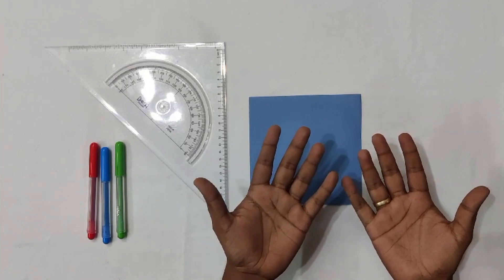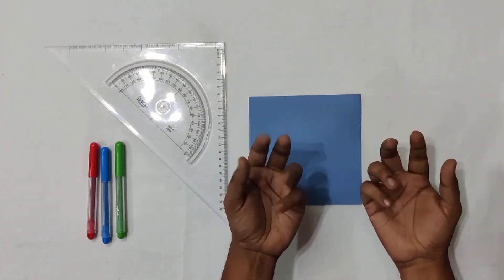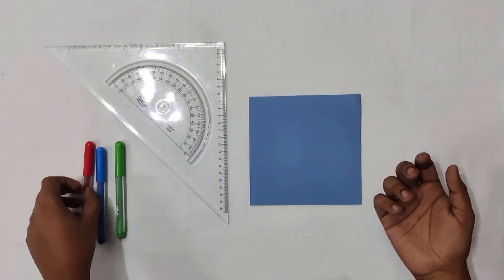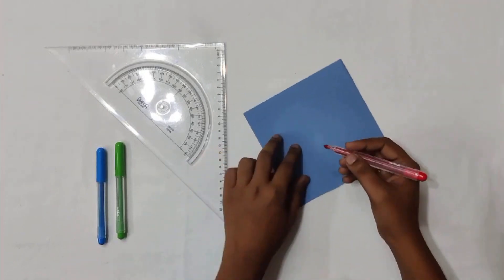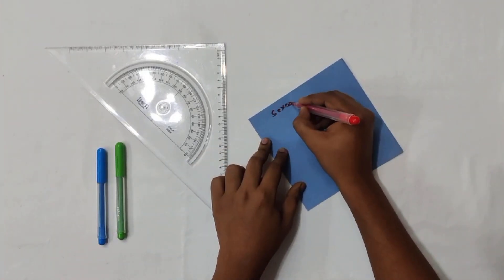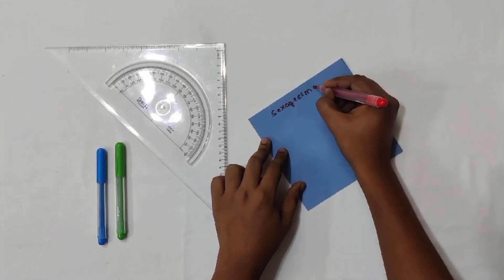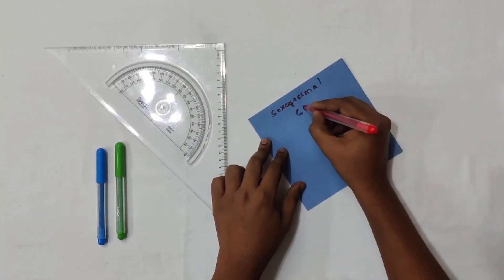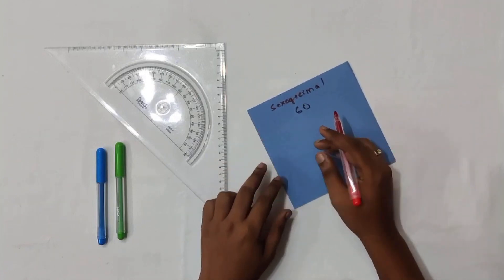We are all aware of the decimal system. It is a base 10 because we use 10 fingers. Today we will be discussing one more number system called sexagesimal. In sexagesimal, the base is going to be 60, and we will discuss why the base is 60.